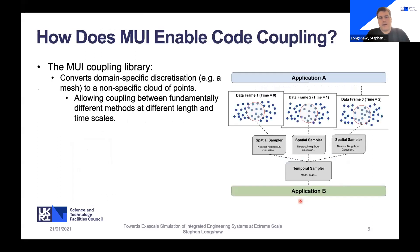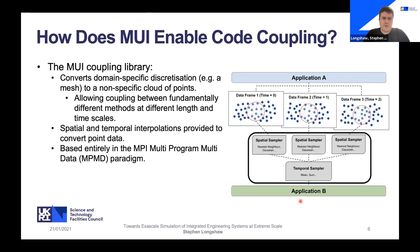MUI creates a peer-to-peer interface between two or more codes, using MPI as its transport layer. The coupled codes can be individually parallelized using MPI, CUDA, OpenMP, OpenCL, or any preferred parallelization technology. The library converts a domain-specific discretization — a mesh — to a non-specific cloud of points, allowing coupling between fundamentally different methods at different length and timescales. It provides a toolkit of spatial and temporal interpolations to convert point data into something useful for each domain-specific representation, and it's based entirely on the MPI MPMD multi-program multi-data paradigm.